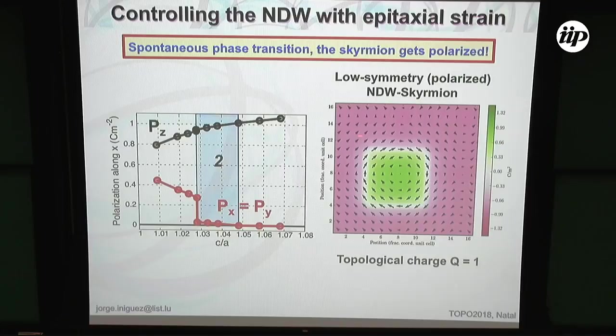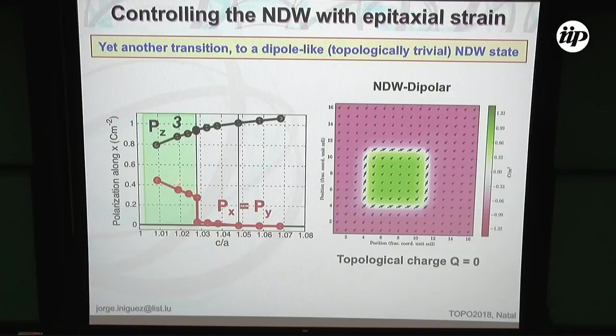If I keep expanding the lattice in-plane, eventually what happens is that I go to a strongly polarized state and the skyrmium disappears. What I get is still something special at the domain wall, but now with the symmetry of a dipole — and topologically it is trivial. So I have two transitions: one from a high-symmetry skyrmium to a kind of ferroelectric skyrmium, and then to something that is not a skyrmium at all — it's a dipole.